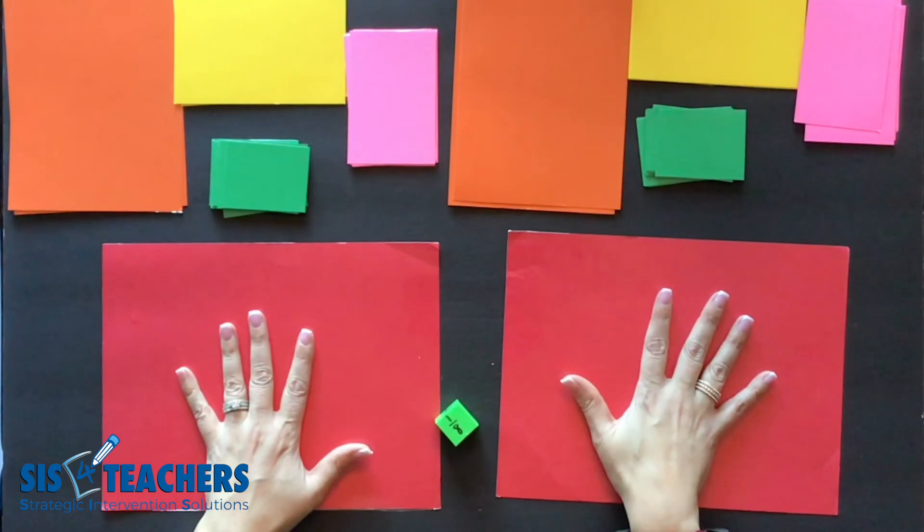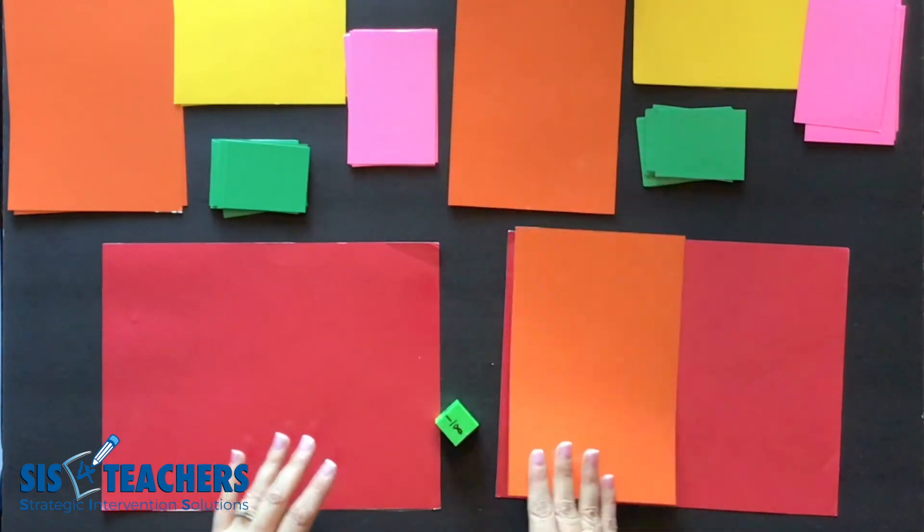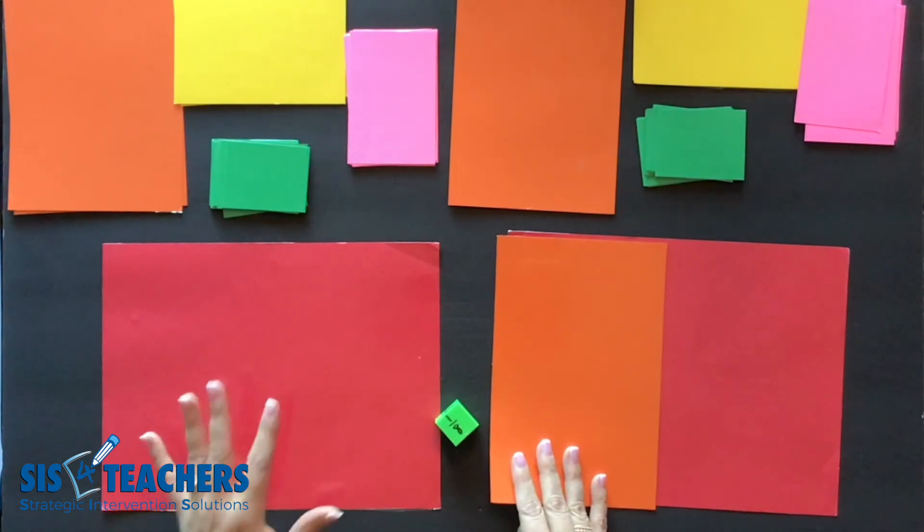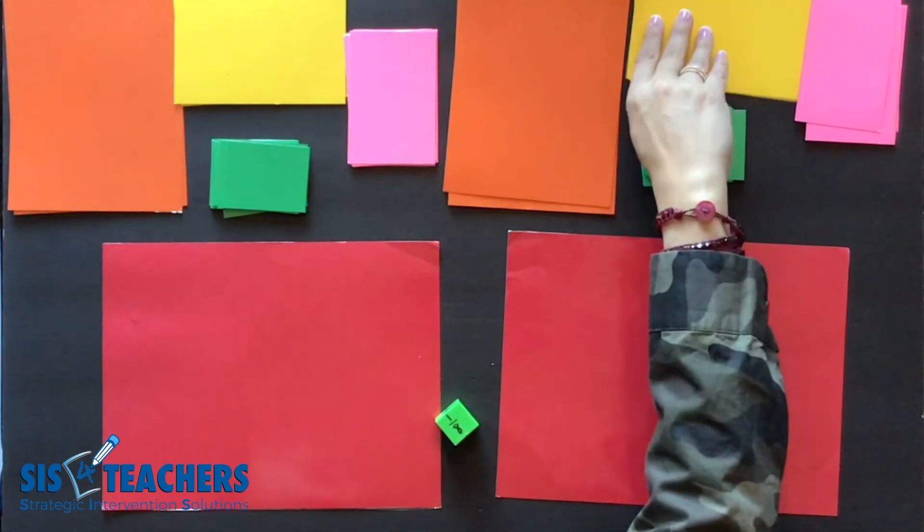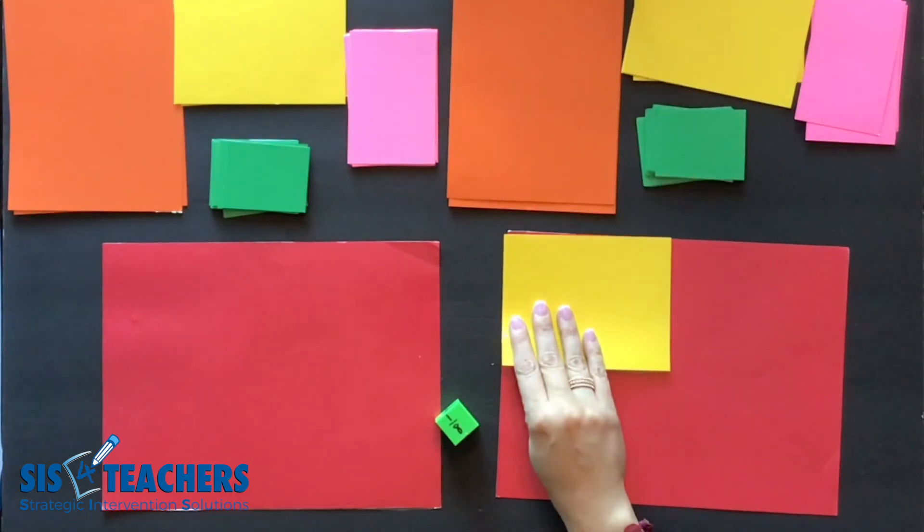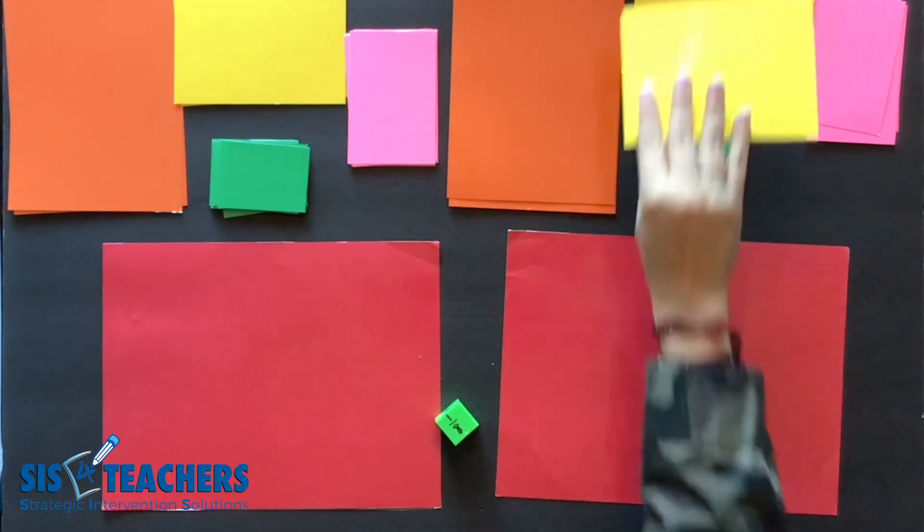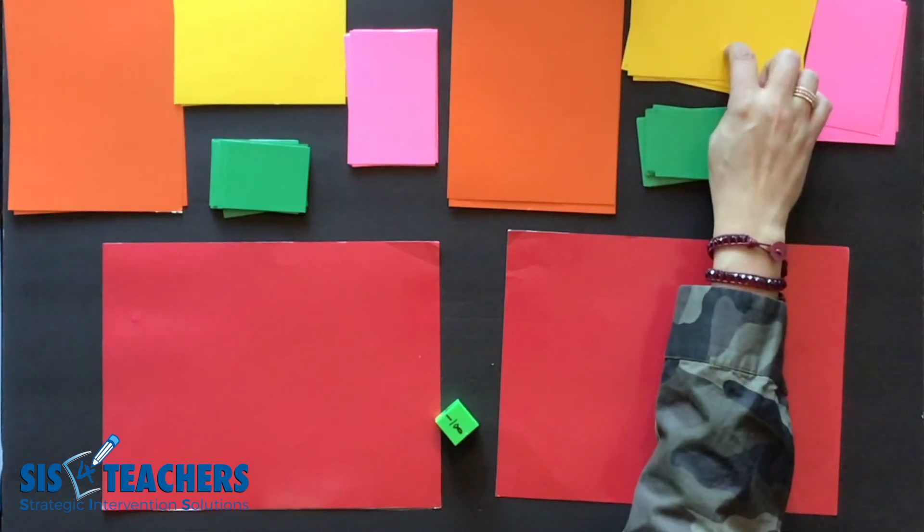Our red is going to be our one whole. When we look at our orange it's going to be one half. Certainly when we're working with this with students before we play with the game you'd want the kids to be familiar with this manipulative and we certainly wouldn't want to tell them what each one is worth. We'd want them to discover that.